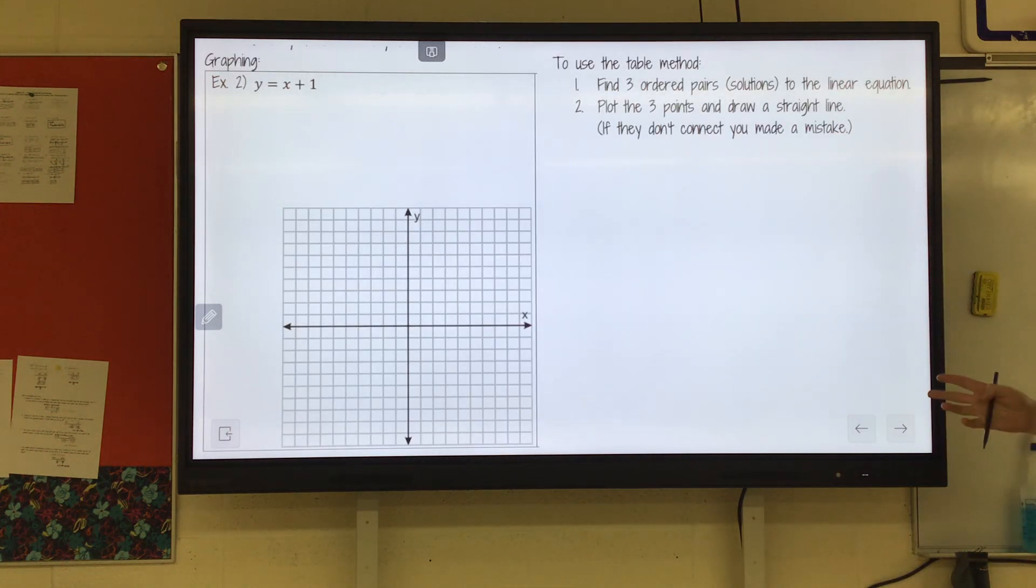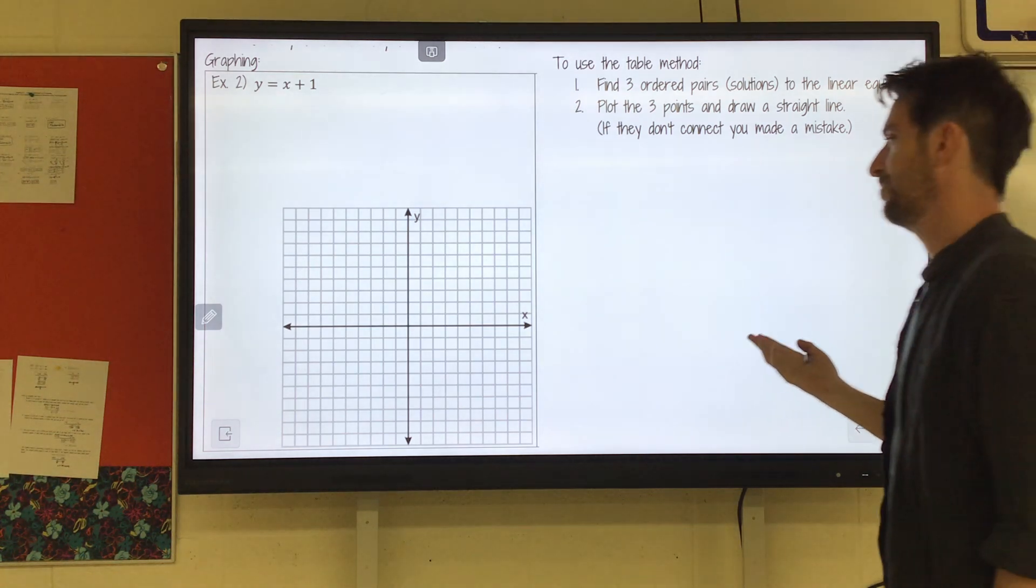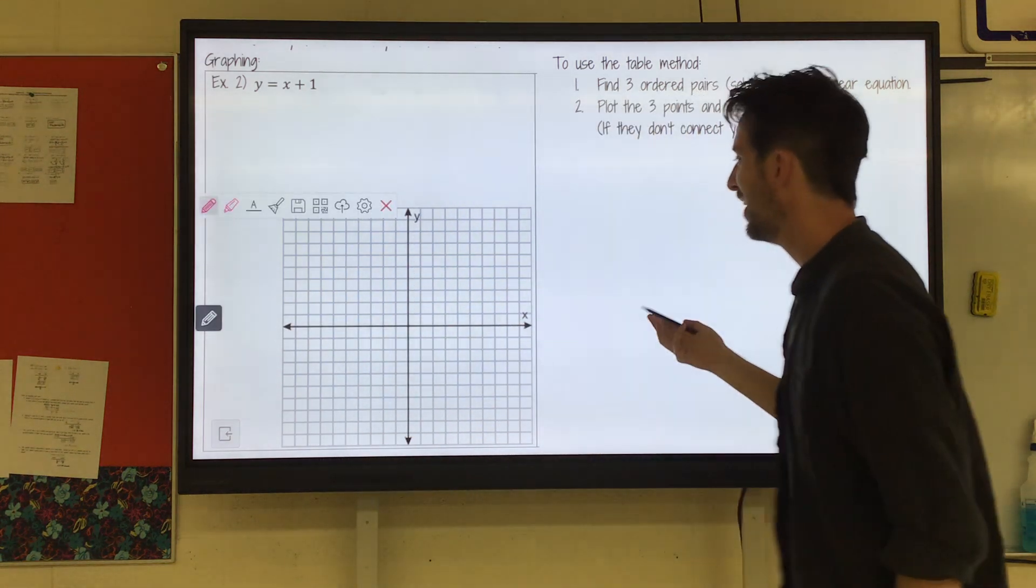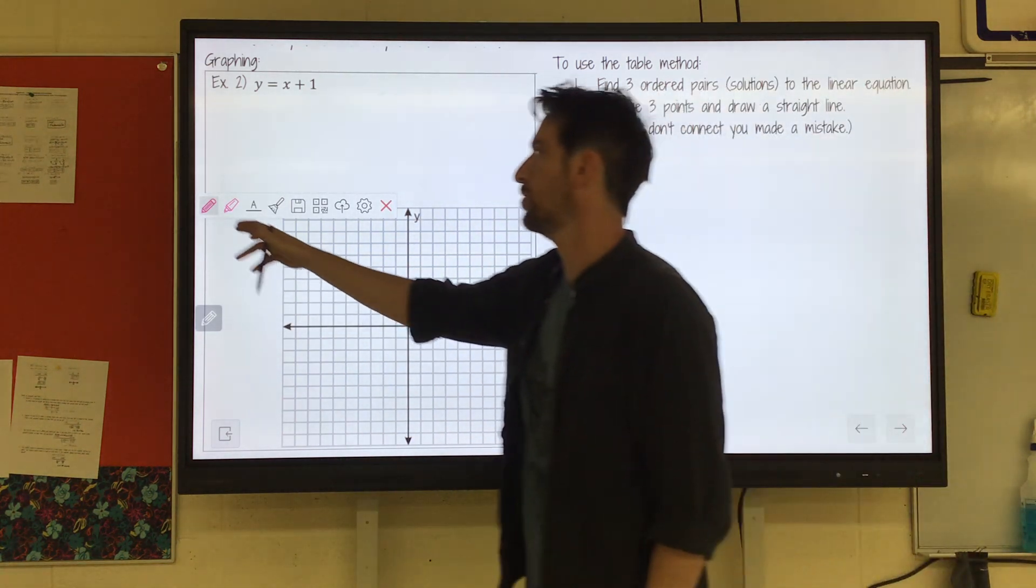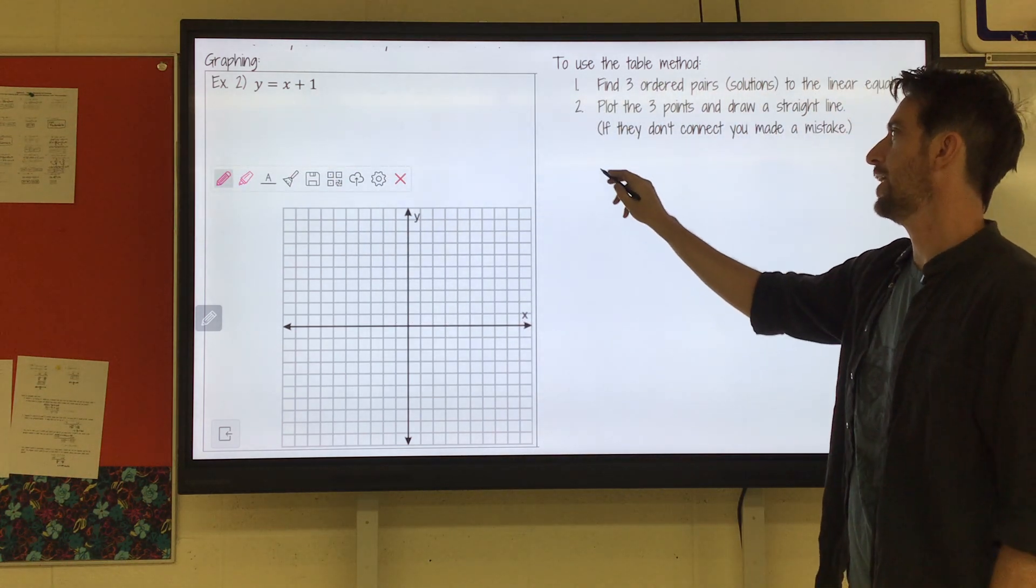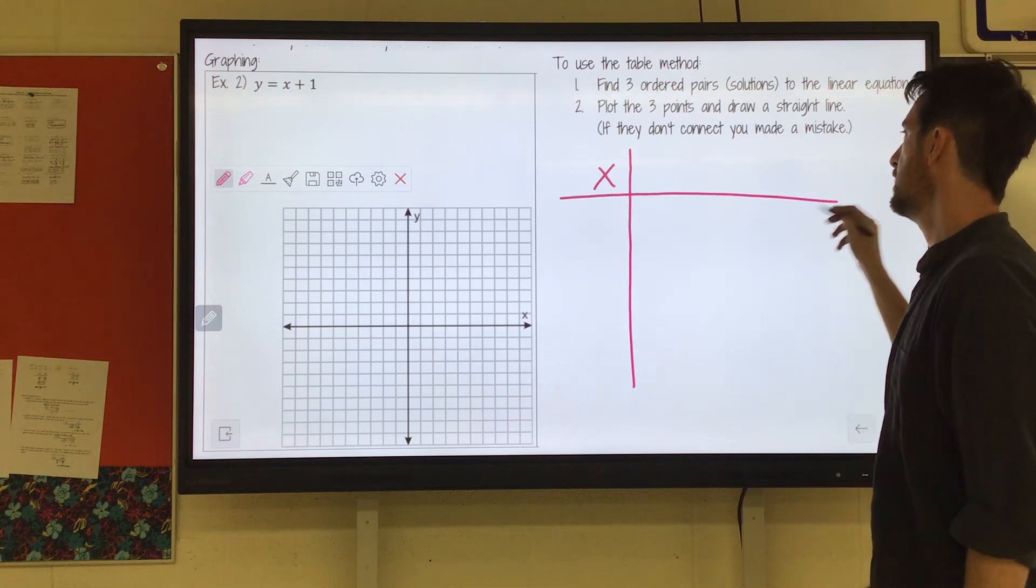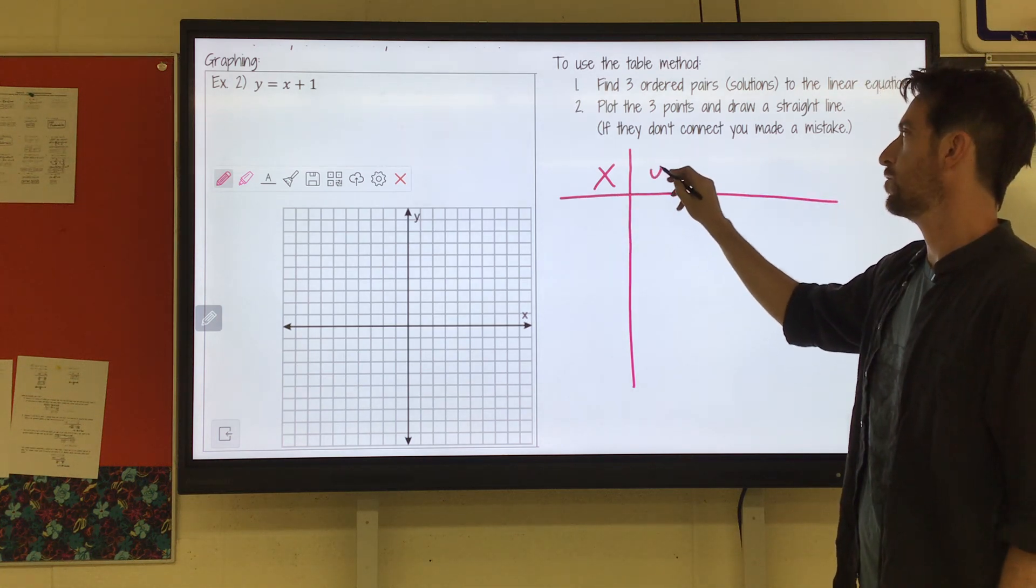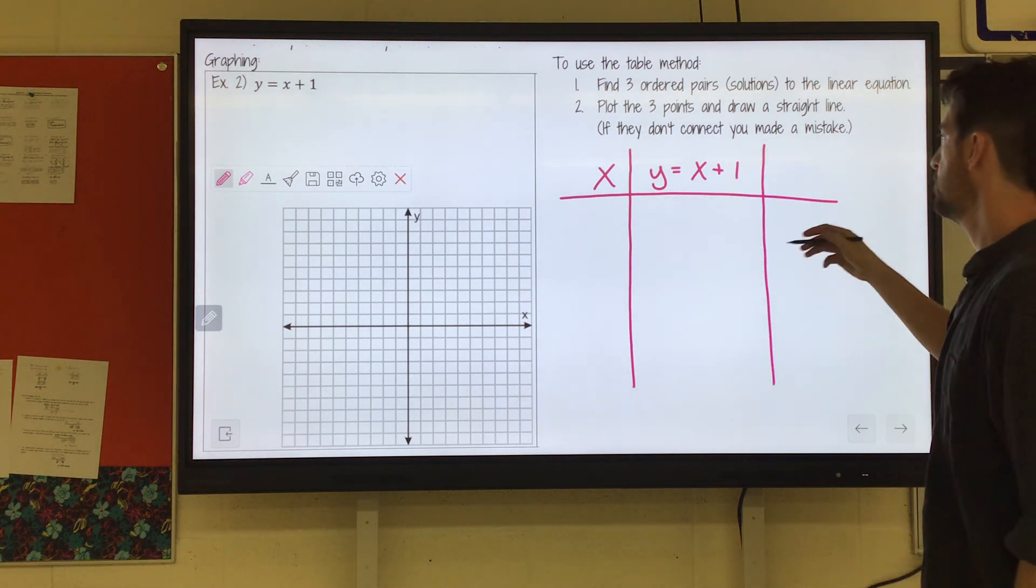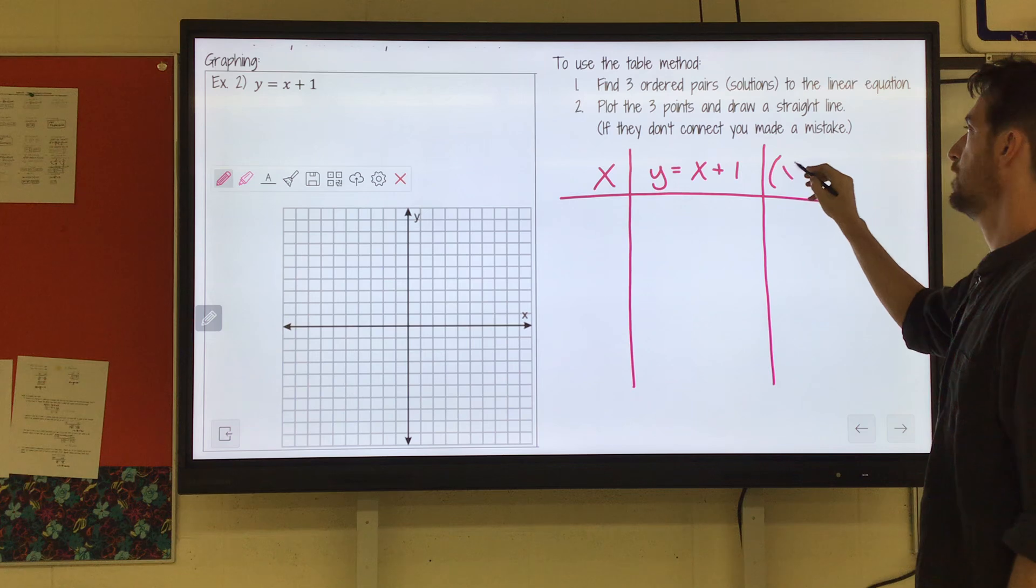Now we're going to graph. Find three ordered pair solutions to the linear equation. Plot the three points and draw a straight line. If they don't connect, you made a mistake. Finding the solutions, here's the way I find it's easiest. So I like to create a bit of a table. I have an x column, and then here's like where I do my work. So y equals x plus 1, and then this would be like the y, or you could do the full coordinate here.